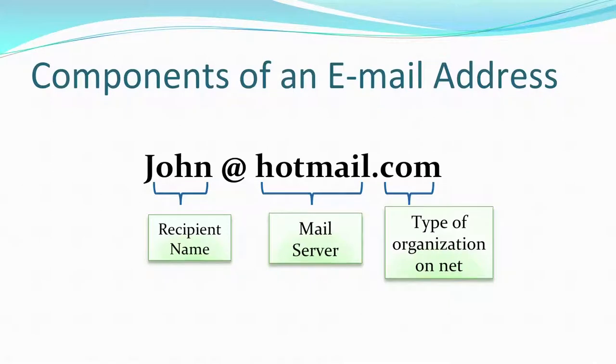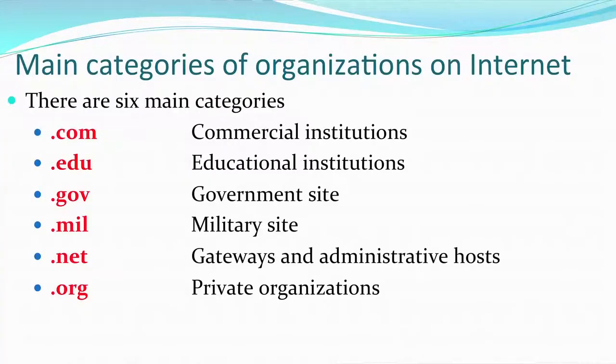Then you have '.com' — the third and final part of an email address, which specifies the type of organization that the service provider belongs to. The various categories are: '.com' means it's a commercial institution, '.edu' educational institution, '.gov' government site, '.mil' military site, '.net' means it's a gateway or administrative host of networks, '.org' means private organizations. Depending on the category, the last section of the email changes accordingly.